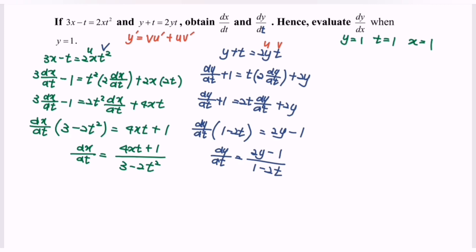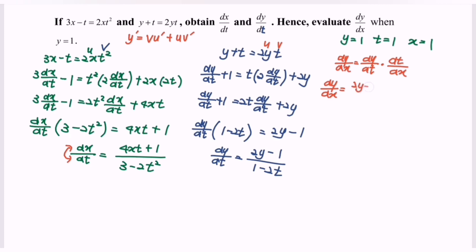Next, find dy/dx. As we know, dy/dx equals dy/dt multiplied with dt/dx, meaning we flip dx/dt. So dy/dx equals (2y minus 1)/(1 minus 2t) multiplied with (3 minus 2t²)/(4xt plus 1).